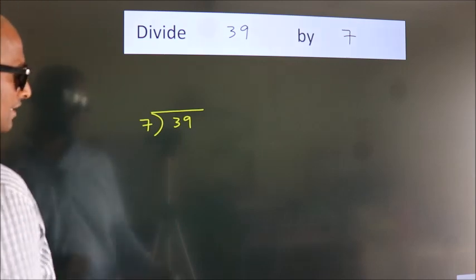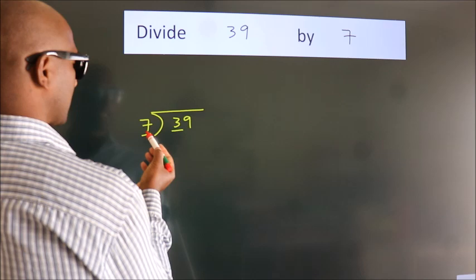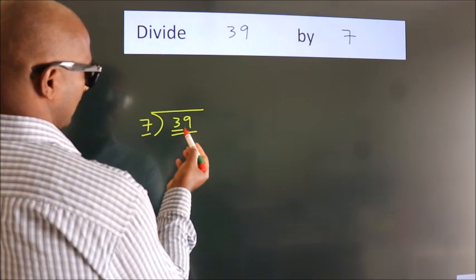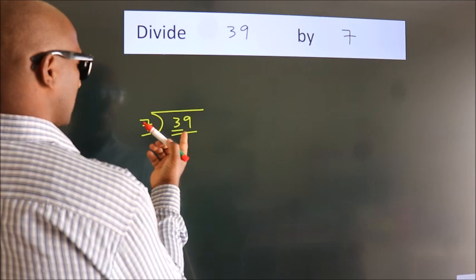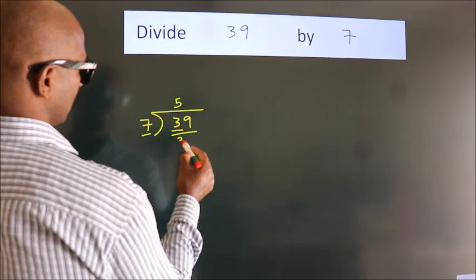Next. Here we have 3. Here 7. 3 smaller than 7. So we should take two numbers. 39. A number close to 39 in 7 table is 7 fives 35.